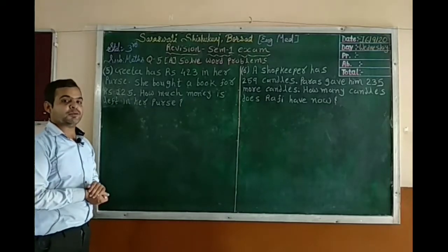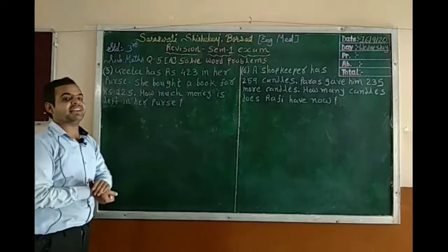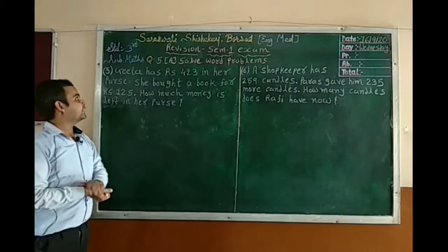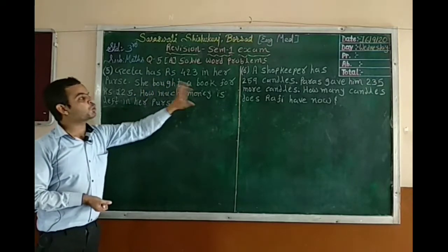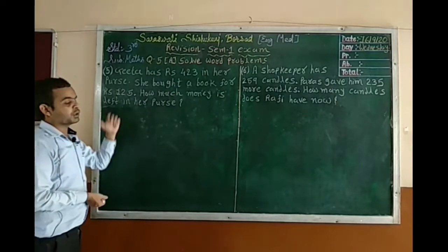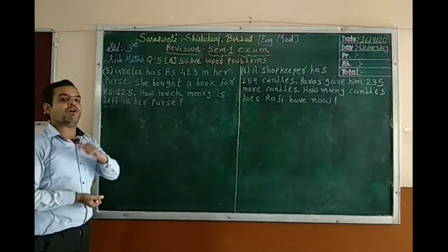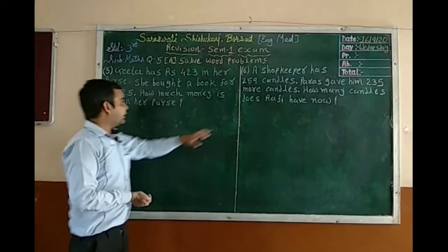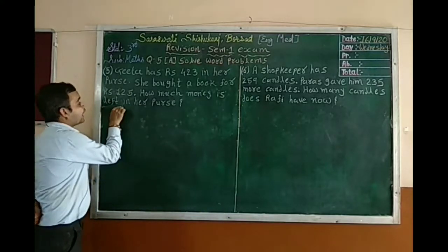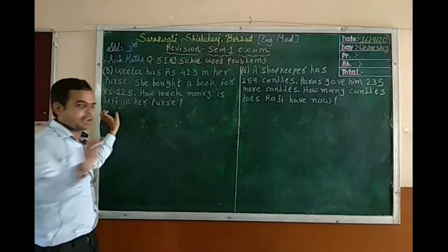Now let's see the fifth word problem. Gita has Rs. 453 in her purse. She bought a book costing Rs. 125. How much money is left in her purse? The keyword 'left' means we have to do subtraction. So in this sum we have to do subtraction.